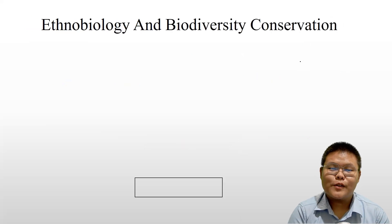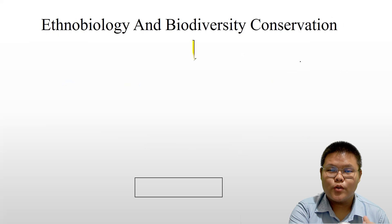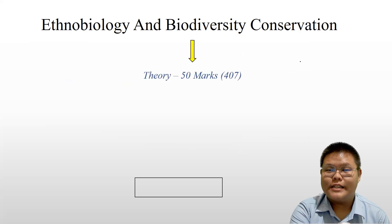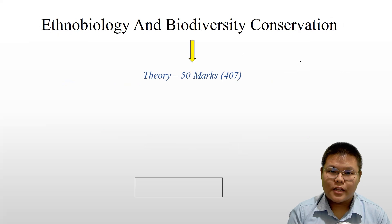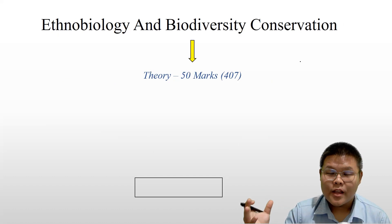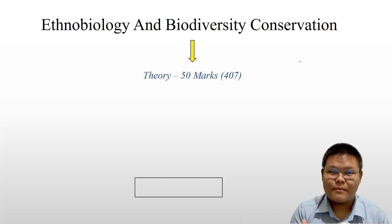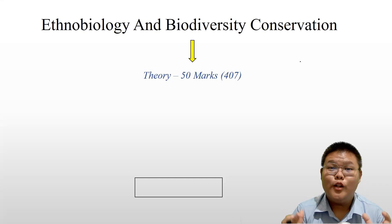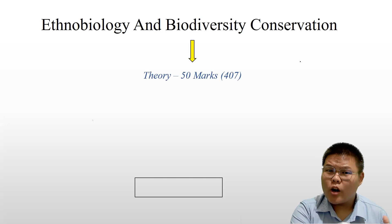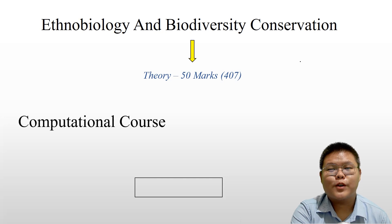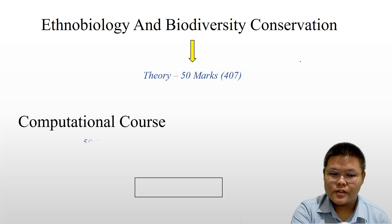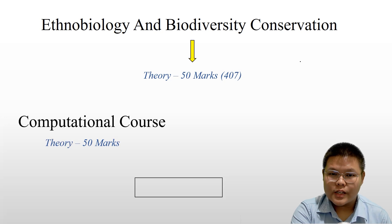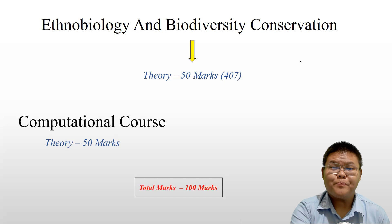Additionally, there is Biology and Biodiversity Conservation worth 50 marks, with code 407. This subject is interdisciplinary, covering general biology, animal products, and plant products relationships. Each sub-section carries 50 marks in theory.